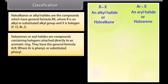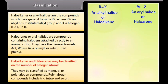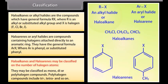Haloarenes or aryl halides are compounds containing halogens attached directly to an aromatic ring, where Ar is phenyl or substituted phenyl. Haloalkanes and haloarenes may be classified on the number of halogen atoms — as mono, di, or polyhalogen compounds. Polyhalogen compounds include tri, tetra, and so on.